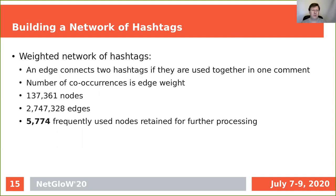Some of these edges are thick, some are thin. This is a humongous network and not easy to process, not easy to make sense of, and possibly not making much sense in general because of so much noise embedded in it. So we reduced the size of the network by identifying the most frequently used tags and the nodes that correspond to these tags. As a result, we selected 5,774 most frequent hashtags for further processing.